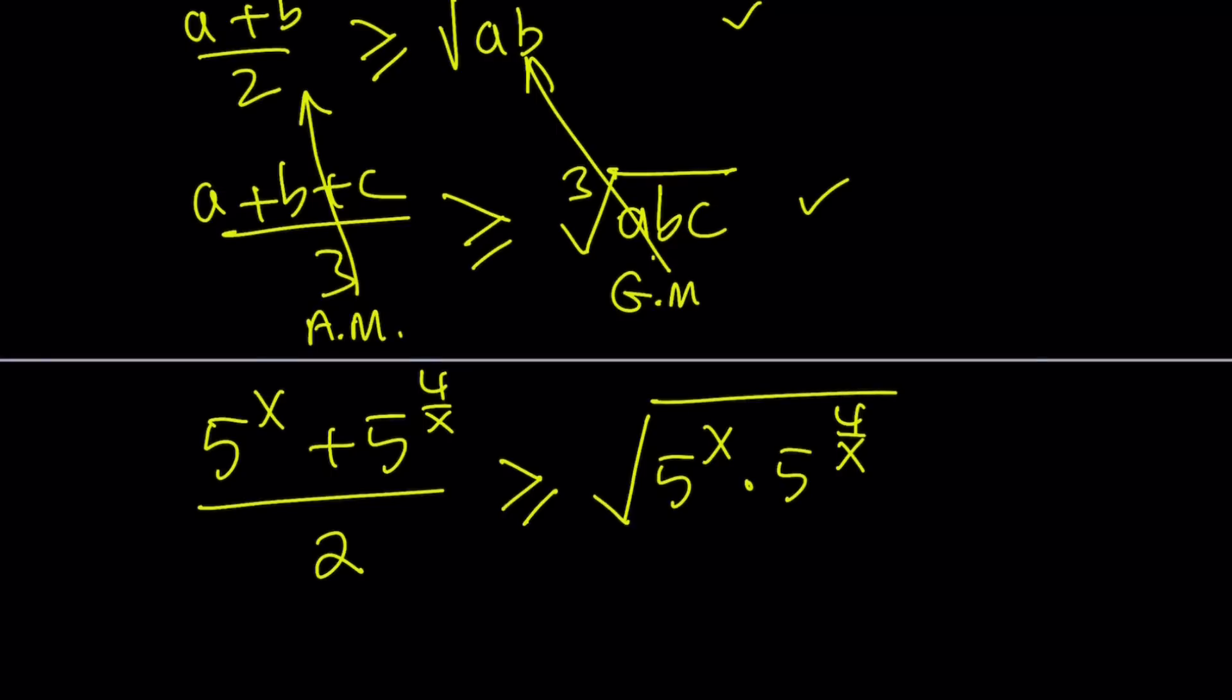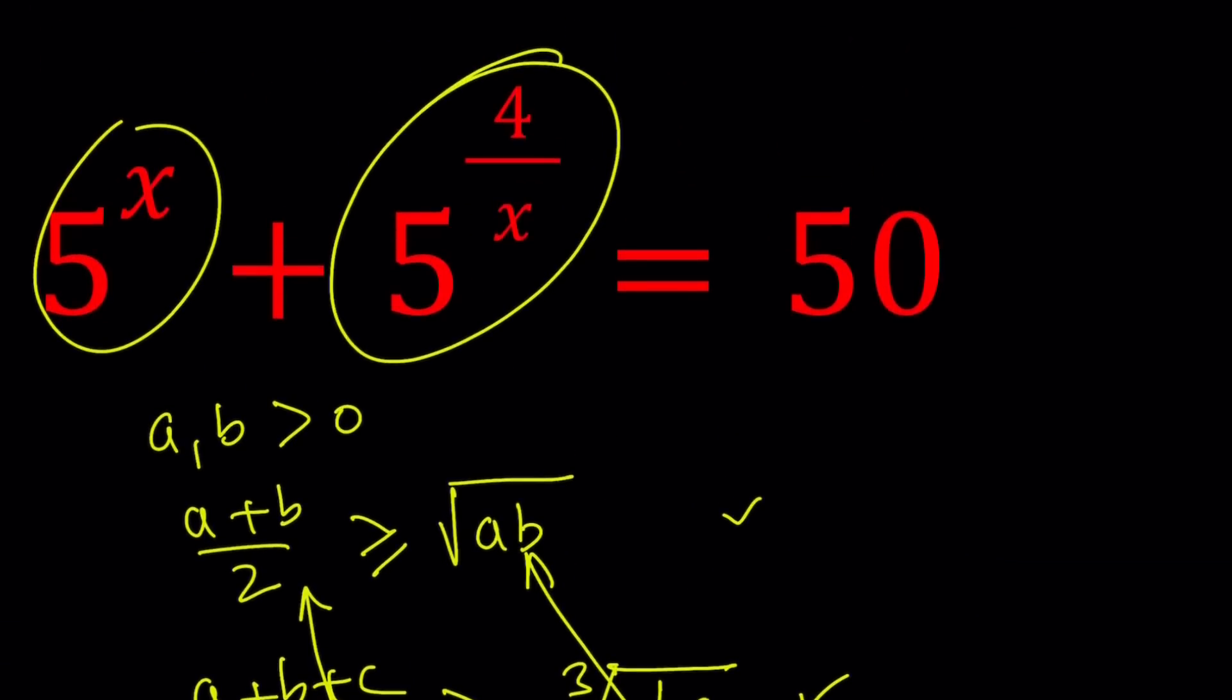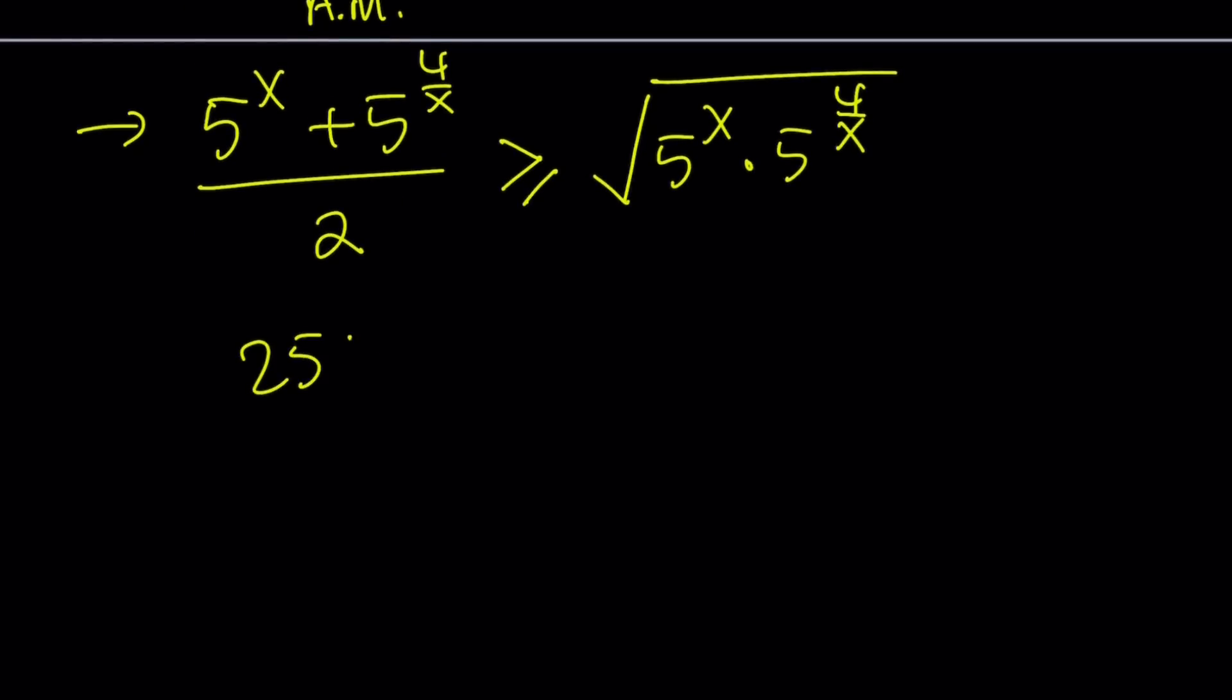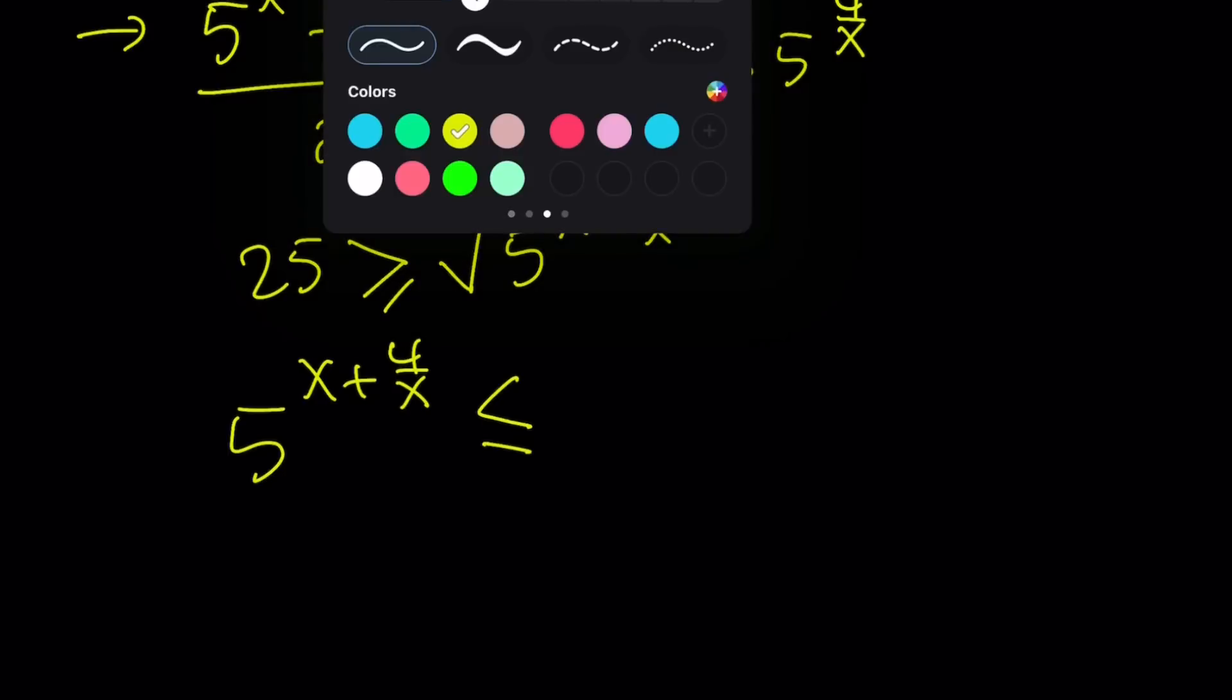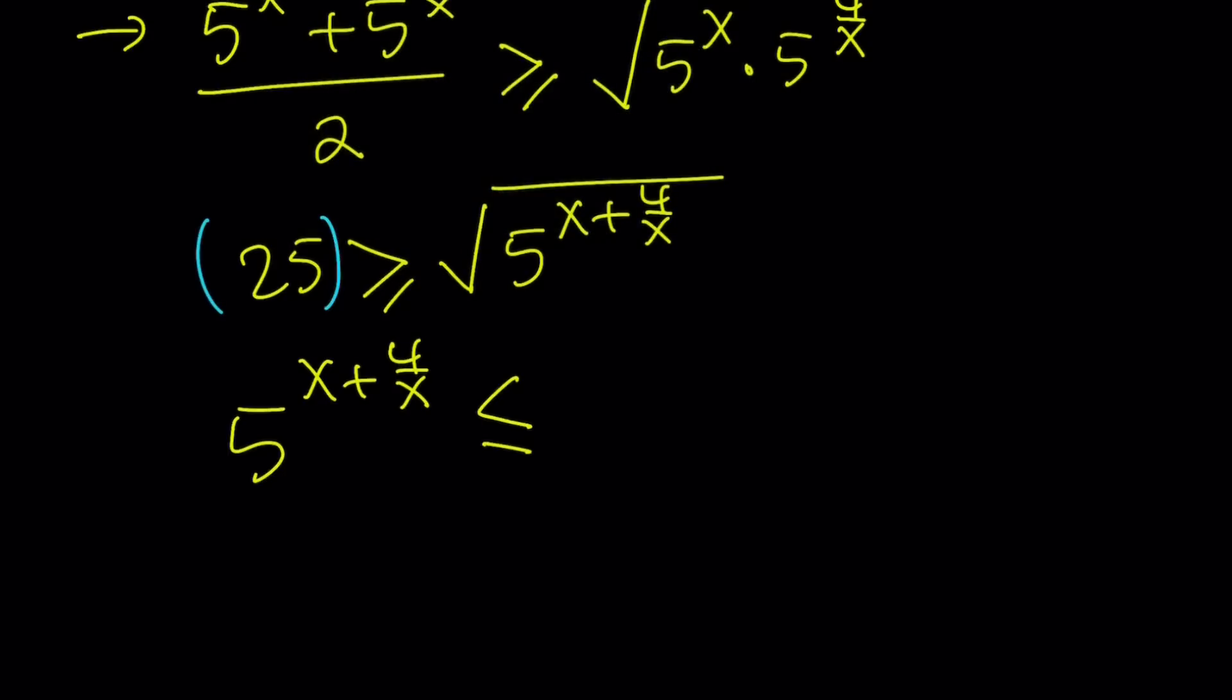This is cool because we know the sum, so we can divide it by 2. We're given that 5 to the x plus 5 to the 4 over x equals 50, so half of that is 25. From here we get the radical being less than or equal to that, but we can add the exponents here, x plus 4 over x.